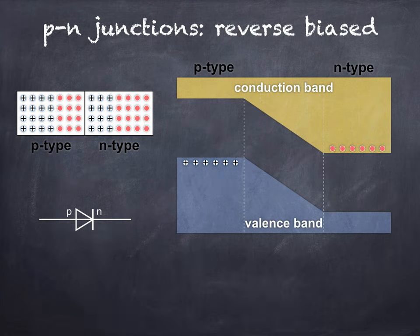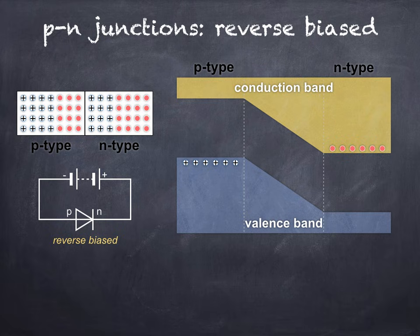To reverse bias the P-N junction, we connect the negative terminal of a battery to the P-type side and the positive terminal to the N-type side. This has the effect of widening the depletion layer, and when looking at the energy band model on the right, the slope in the depletion layer is far steeper. When the P-N junction is reverse biased like this, the depletion layer has become a greater barrier to the movement of electrons from N-type to P-type, and holes from P-type to N-type.